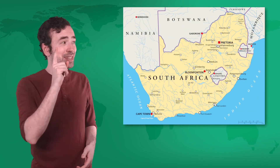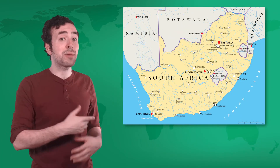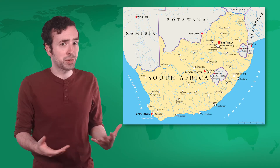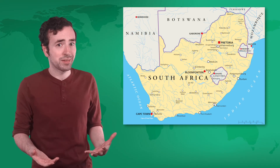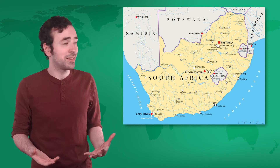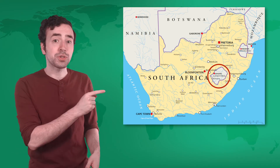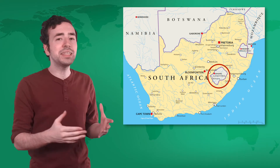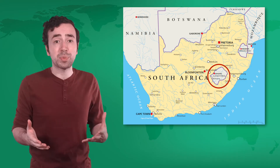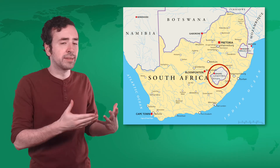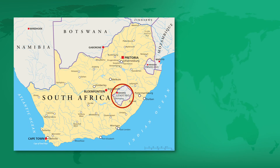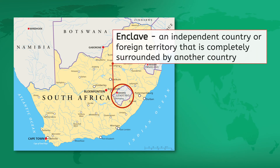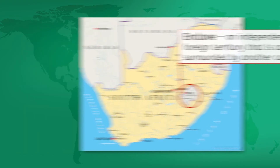Finally, check out South Africa — a perforated state. This is Lesotho, an independent state that just happens to be inside South Africa. Lesotho is an enclave: a state or foreign territory that's completely surrounded by another country.